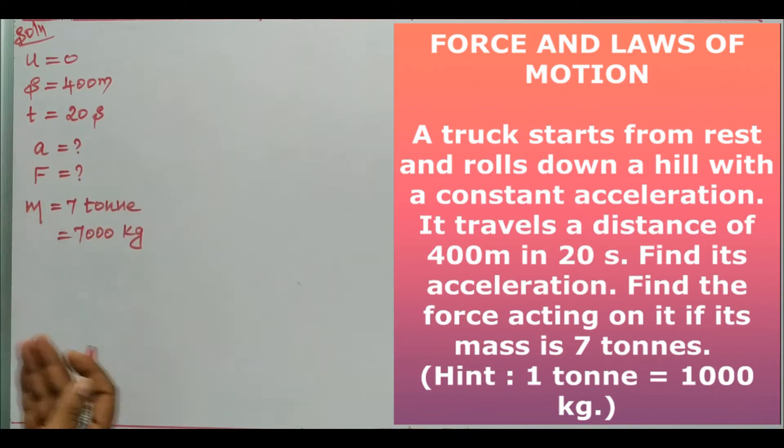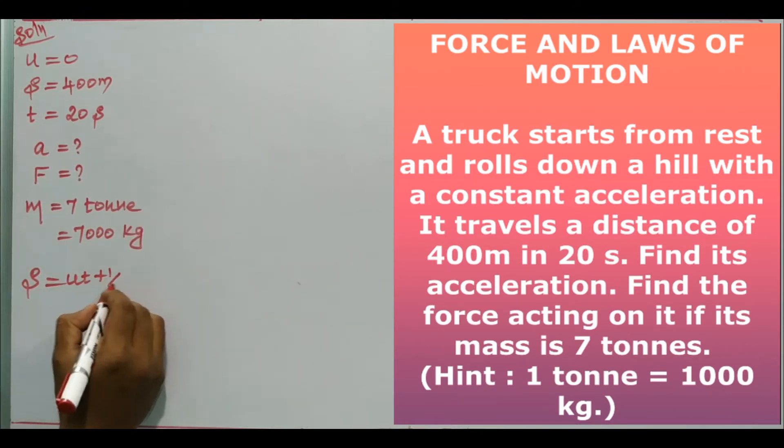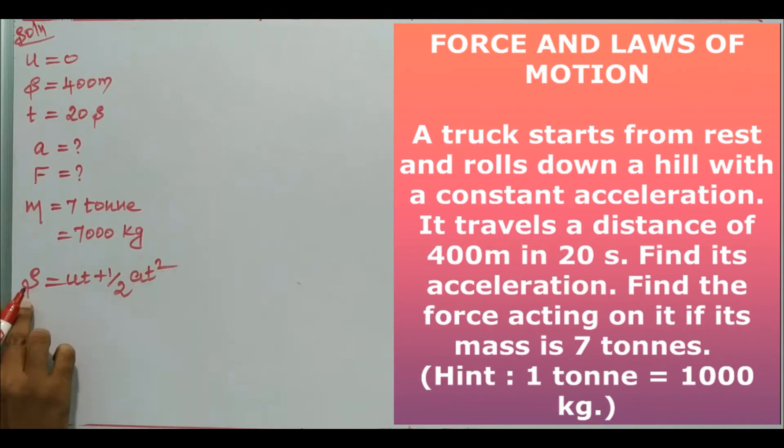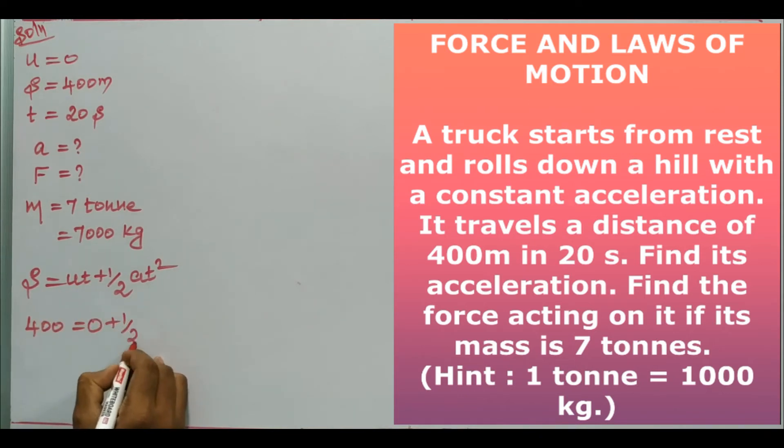We have t and s, so we can use s equals ut plus half at squared. Substituting, 400 equals u times 0, which becomes 0, plus half a times 20 squared, which is half a times 400.